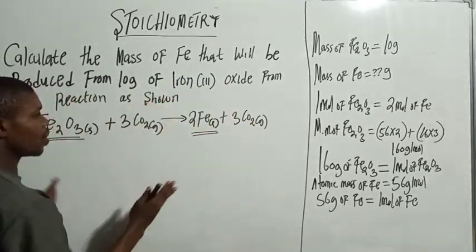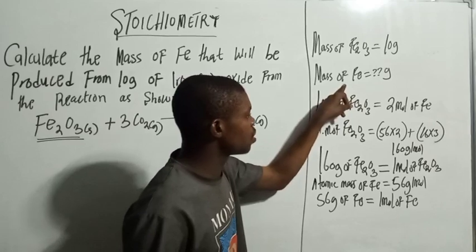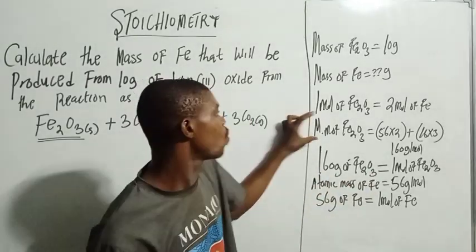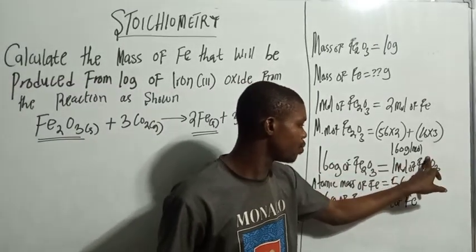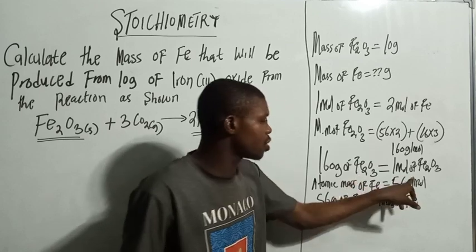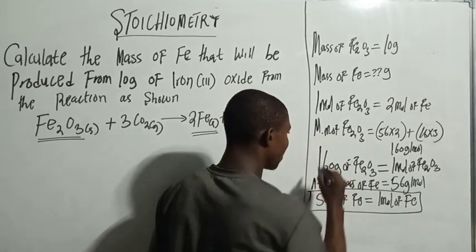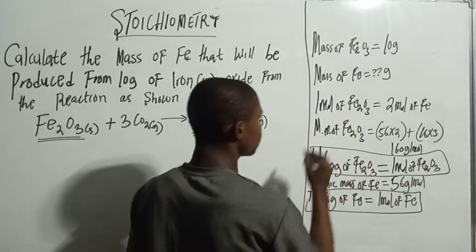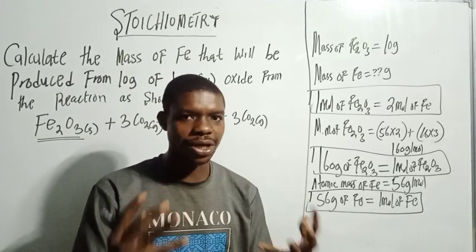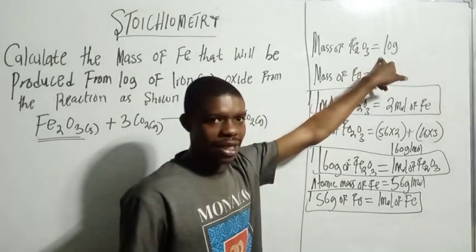Before you start solving this question, you need to prepare the relationships you will use. The molar ratio comes from the balanced equation: 1 mol Fe₂O₃ to 2 mol Fe. The molar mass of Fe₂O₃ is 160 g/mol, meaning 160 grams of Fe₂O₃ per mole. The molar mass of Fe is 56 g/mol. These are the values you'll use in your calculation. We are starting with 10 grams of Fe₂O₃. I'm going to use dimensional analysis.